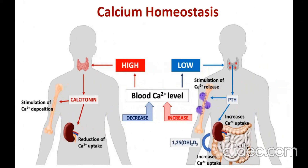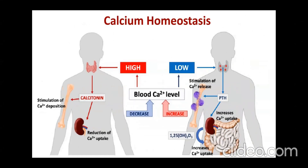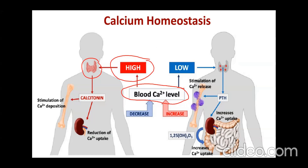Calcium homeostasis: when blood calcium levels are high, the thyroid gland is stimulated. The parafollicular cells of the thyroid gland release calcitonin hormone in response to high blood calcium — a state called hypercalcemia.